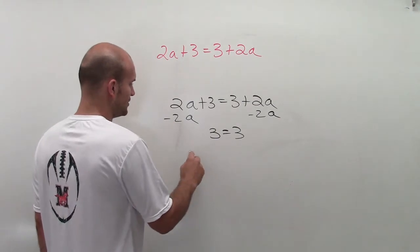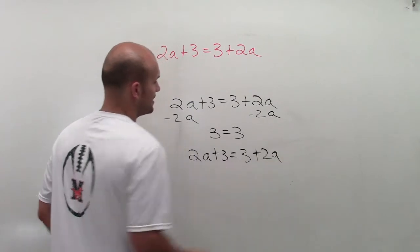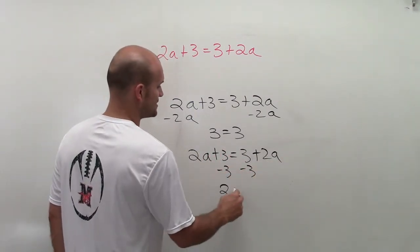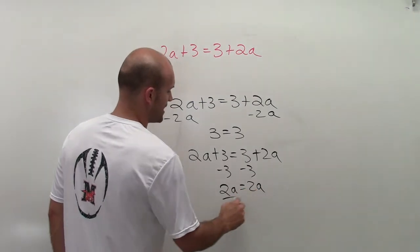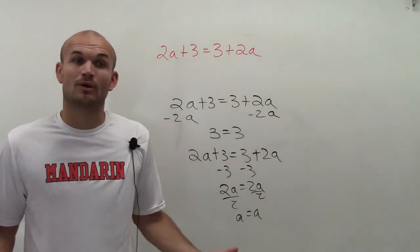Now let's take a look at it the other way. 2a + 3 = 3 + 2a. Let's say you just got rid of the 3s. So you subtract 3 on both sides. You get 2a = 2a. Then you divide by 2. You get a = a. a is always going to equal a.